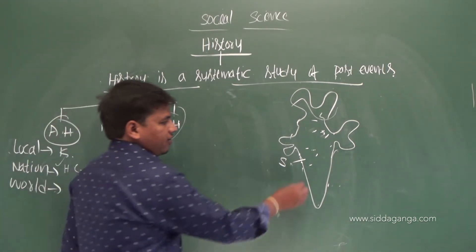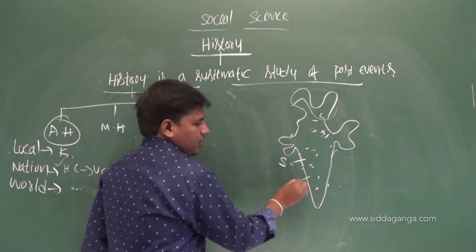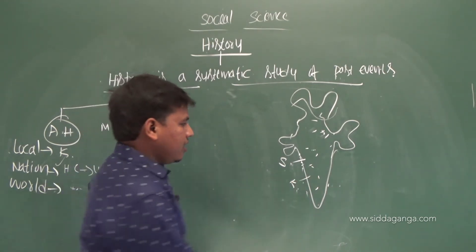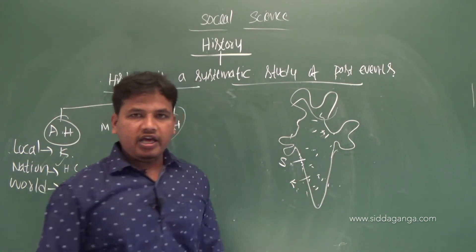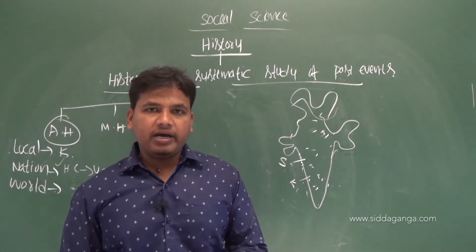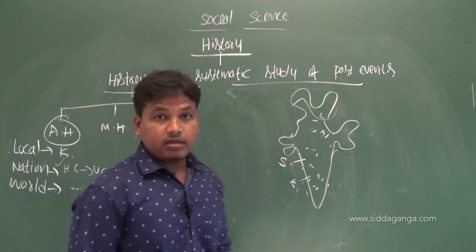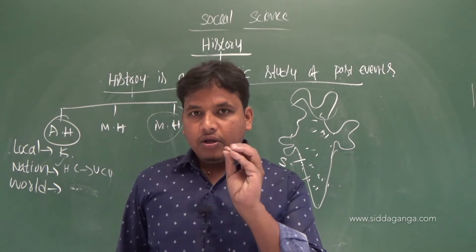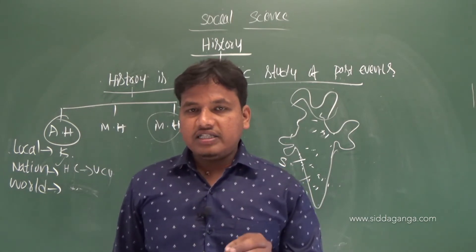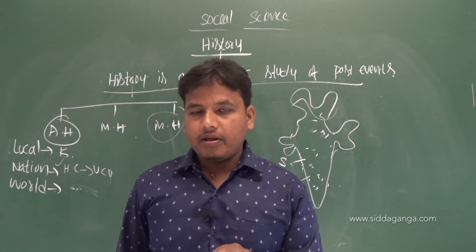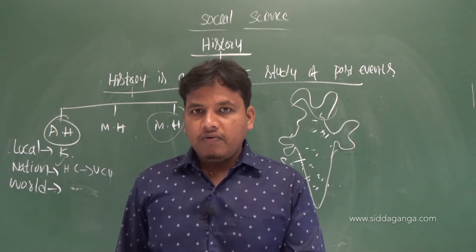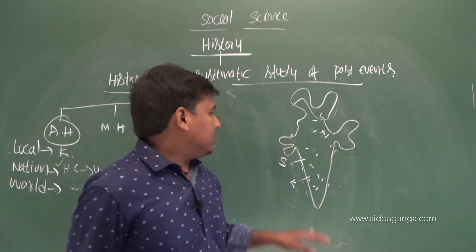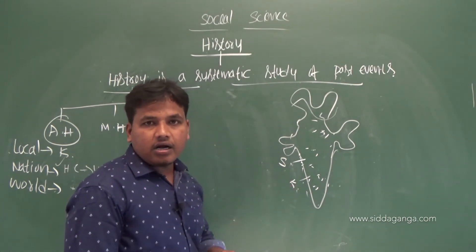After the Kadambas, Karnataka was ruled by the Gangas, who ruled around the Mysore area. The famous king of the Ganga dynasty was Durvinita. The statue of Bahubali, or Gomateshvara, was built by Chavundaraya, who belonged to the Ganga dynasty.